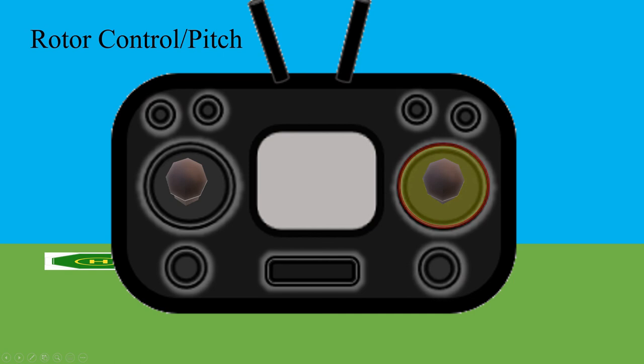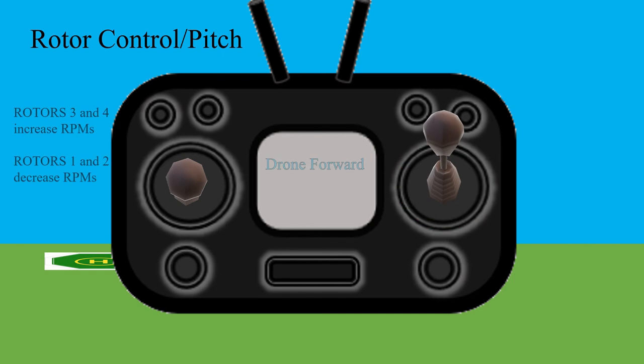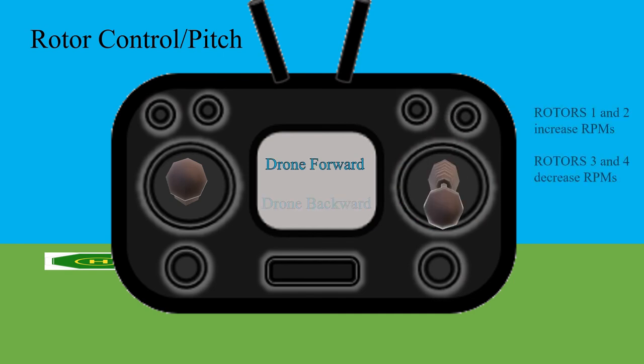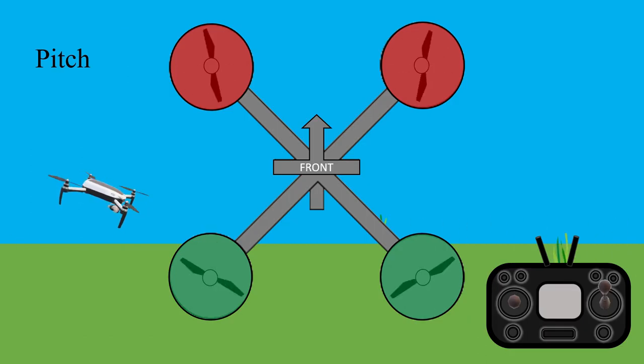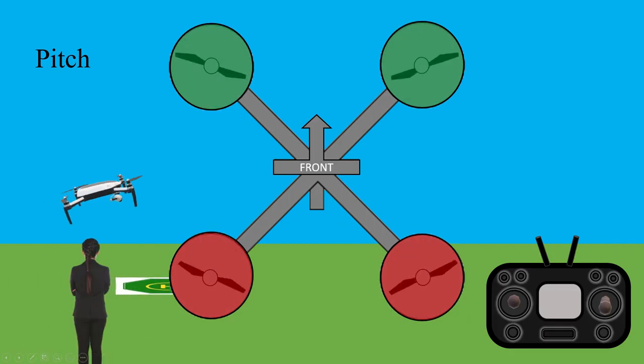The second dimension the drone can move is called pitch. The drone tilts upward or downwards, based on its orientation and the location of its nose. A downward tilt will move the drone in a forward motion, while an upward tilt will move it backwards.